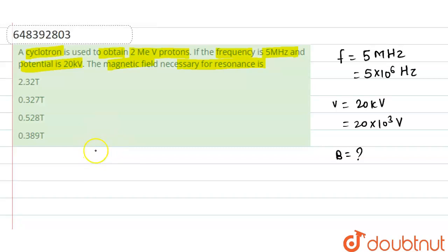In the cyclotron, due to the alternating potential, any charge present there will perform circular motion between the D's. For circular motion there must be a centripetal force, and this centripetal force is balanced by magnetic force acting on that proton.